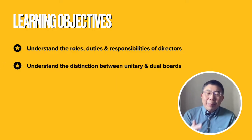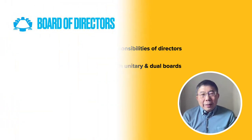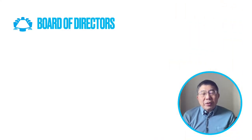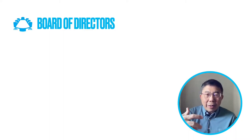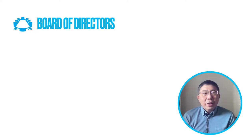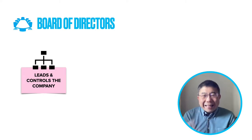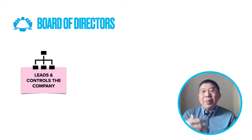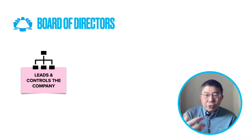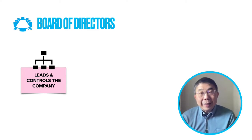We will also look at the distinction between unitary boards and dual boards. The board of directors plays a very important function in actually governing the company, to ensure that the company is being run in a proper manner and there is proper procedure and structure within the company. The board of directors plays a very important leadership role, and also helps to control the company to ensure it is growing in a healthy manner, running ethically, complying with regulation, and protecting the interests of stakeholders.